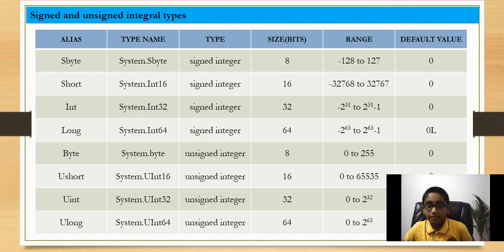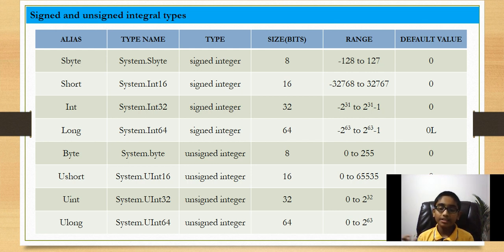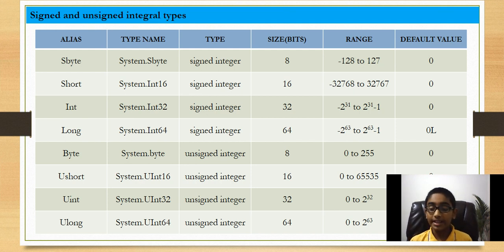SByte can store a value from minus 128 to plus 127. Then we have a column for default values. For sbyte the default value is 0, and for long the default value is 0L — where L is the suffix for long. I'll show you that in the Visual Studio demo. If you declare a variable and assign it a non-decimal integer value, the compiler will consider that as an integer.